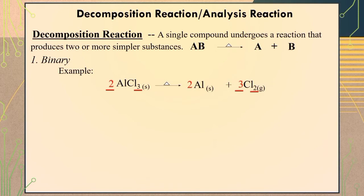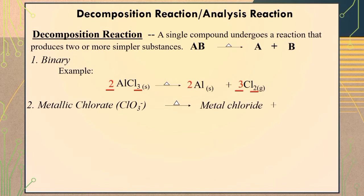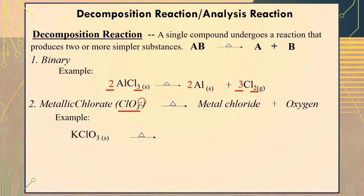Another type of decomposition reaction is the decomposition of metal chlorate. When heat energy is applied to metal chlorate, it will dissociate into metal chloride plus oxygen. Remember that chlorate is a polyatomic ion having only one charge, which is negative one. For example, when heat energy is applied to potassium chlorate, it will dissociate into solid potassium chloride plus oxygen gas. To balance the equation, place a coefficient of 2 on the reactant side and a coefficient of 3 on the product side for oxygen, making a total of 6 atoms of oxygen both on the reactant and product side. Finally, place a coefficient of 2 before the chemical formula of potassium chloride to balance potassium and chlorine with two atoms each on the reactant and product side respectively.